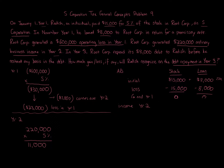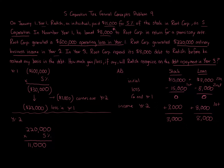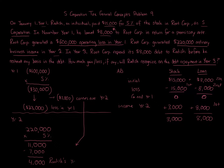The rule is: when reducing for a loss, you first reduce from the stock, second from the loan. When increasing for income, you first increase the loan up to its face amount. We're at zero basis and need to restore the loan to its face amount of $8,000. With $11,000 of income, we increase the loan to $8,000 and the remaining $3,000 increases stock basis. Then the $7,000 carryover loss offsets the $11,000 income, so Radish's Year 2 reportable income is only $4,000.